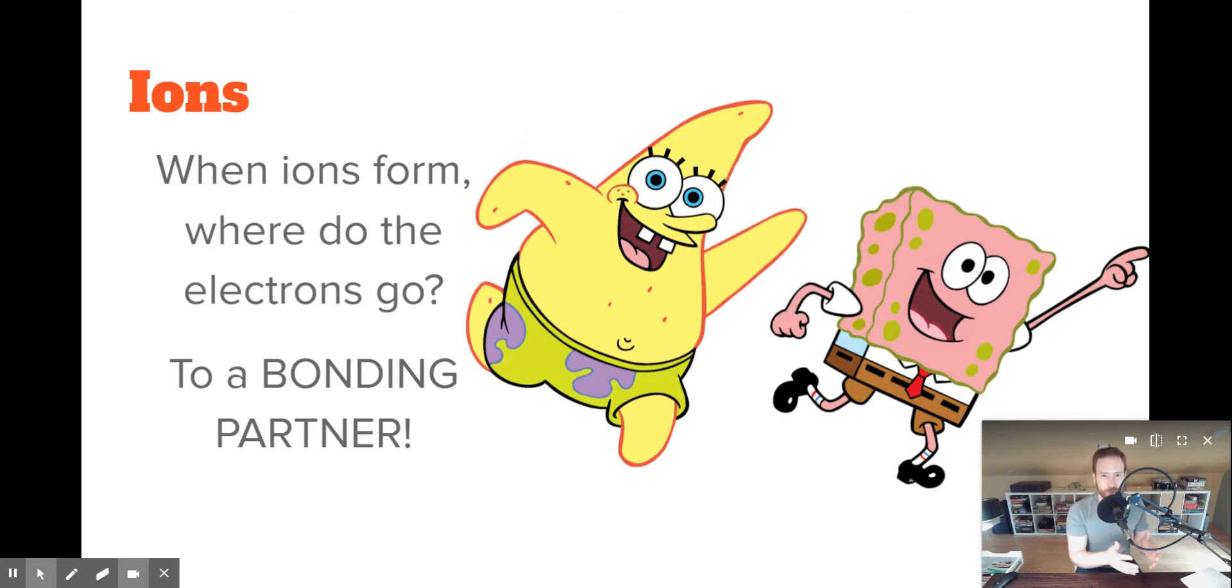So, if an atom wants to gain an electron, it's got to get it from another atom. If an atom wants to lose an electron, it has to give it to another atom. And generally, what that means is that atoms that want to give electrons and atoms that want to gain electrons find each other, and they exchange electrons. And we call them bonding partners.